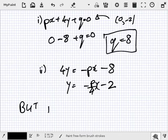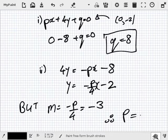But M equals minus P over 4, which we're told is equal to minus 3. So therefore, P has to be 12.